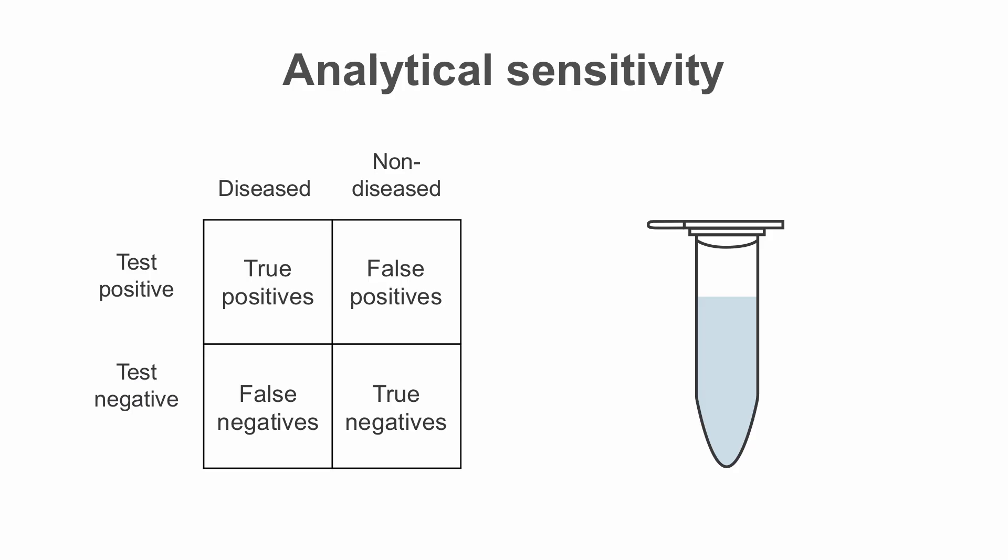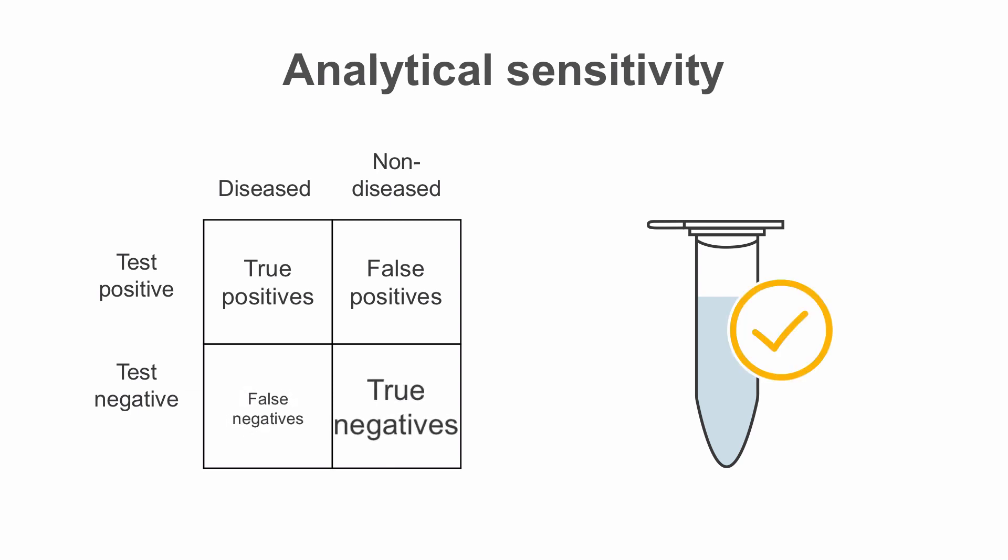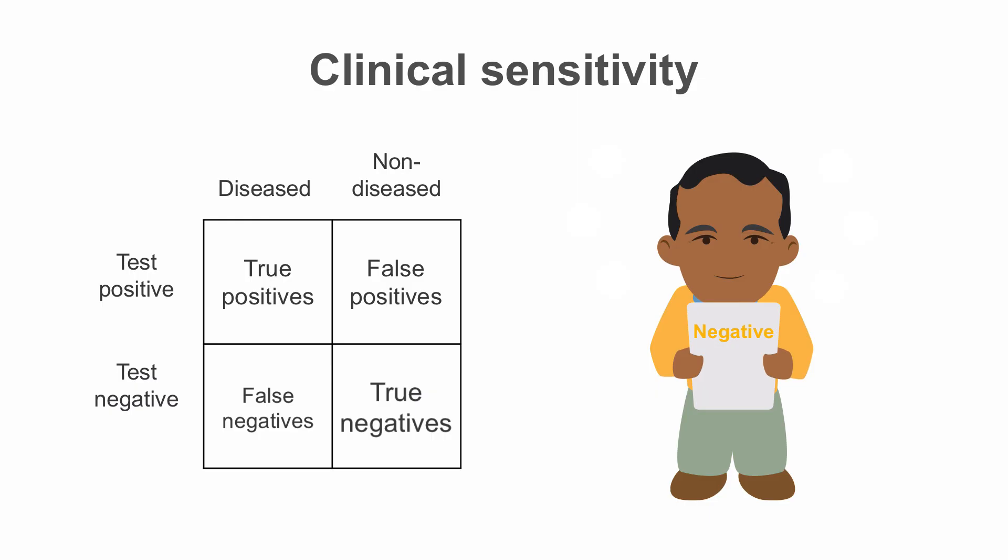The analytical sensitivity of SARS-CoV-2 RT-PCR assays is still up for debate, but it's generally thought to be high. However, the clinical sensitivity of RT-PCR for SARS-CoV-2 is only around 70 to 80 percent at best. One study estimated it to be as low as 38 percent. This means a single negative test result does not always mean the patient doesn't have the disease.